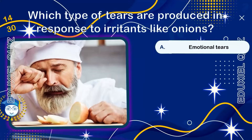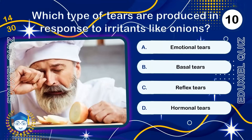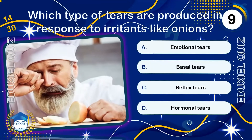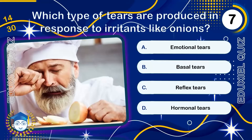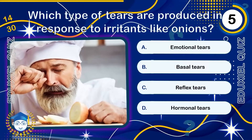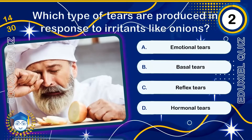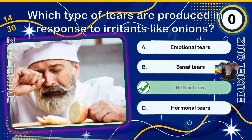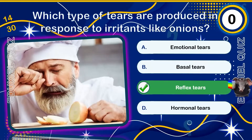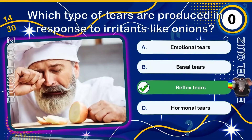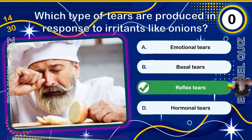Which type of tears are produced in response to irritants like onions? Reflex tears are produced when the eyes are exposed to irritants like smoke or onion vapors. They contain higher levels of water to flush away foreign particles quickly. Unlike emotional tears, they don't contain stress-related hormones.